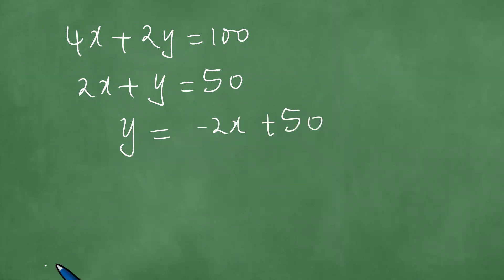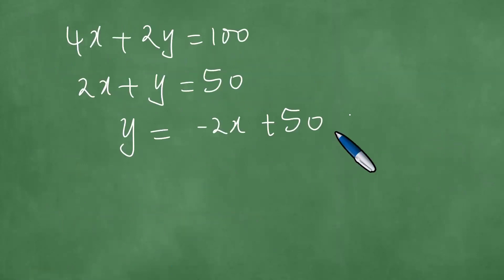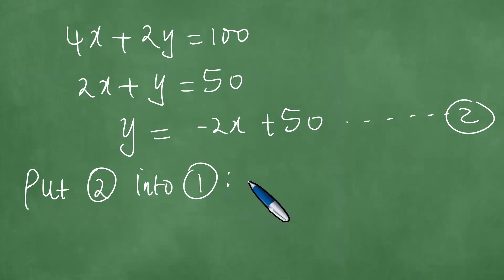This one here is the first equation, and this one here is the second equation. So what you do, you put 2 into 1. So that wherever there is Y in one, you put minus 2X plus 50.